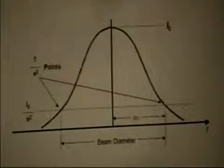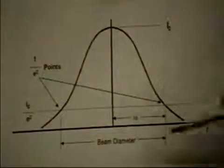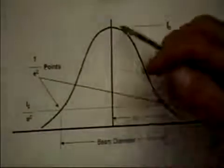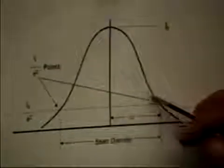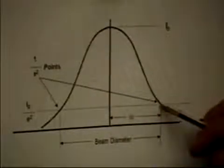Given that lasers are typically normally distributed, if we just measure the distance from the center point, or the maximum, down to the one over e squared point, and then just double that, or look at the mirror image, we should get the overall beam diameter for that laser. And that concludes the laser beam profile experiment.